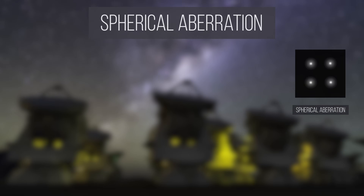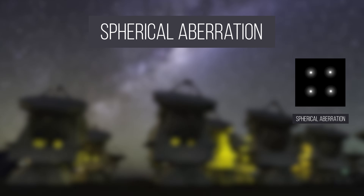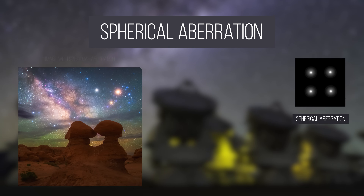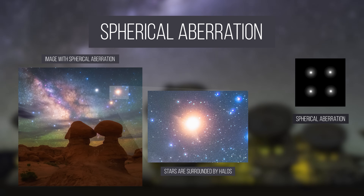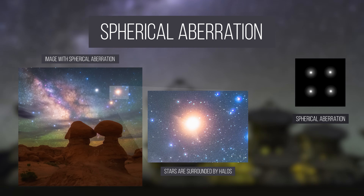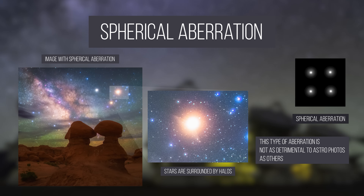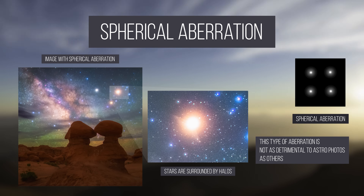Spherical aberrations are less common. In the case that your lens suffers from spherical aberration, stars will appear with halos surrounding them. This aberration isn't as detrimental to your astrophotos as others, and stopping down the lens often corrects it.